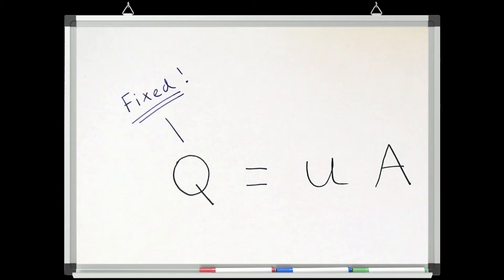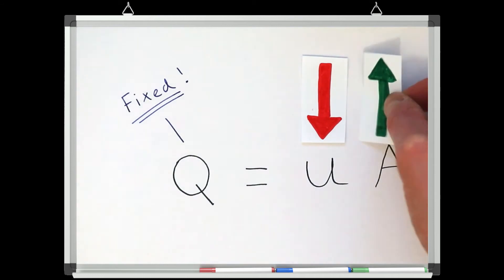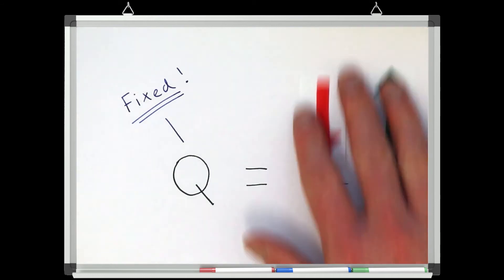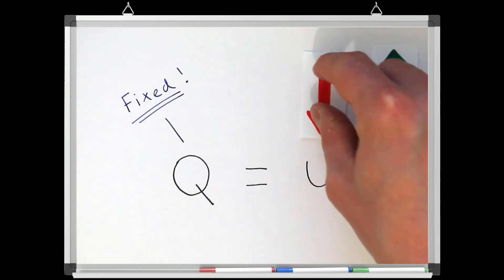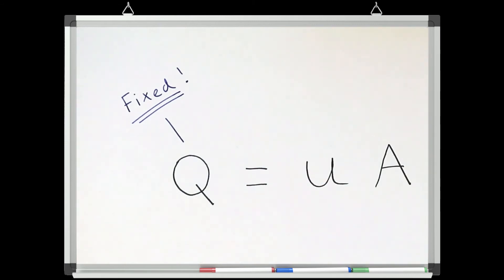So if the discharge is fixed, that means if we increase the velocity, the area must decrease, or if we decrease the velocity, the area must increase, and so on and so forth. If either the velocity or the area increase or decrease, the other must do the opposite to conserve mass.